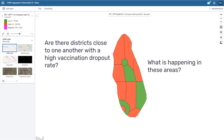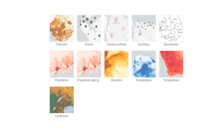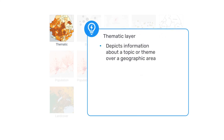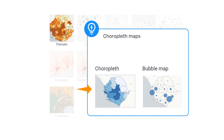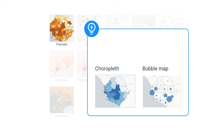Using a map, we can formulate questions like these and identify areas for follow-up. The main types of layers used to analyze aggregate data in DHIS-2 are thematic, facilities, and boundaries. A thematic map depicts information about a topic or theme over a geographic area. These data themes can be shown using a choropleth or bubble map. Choropleth maps display the data based on geographical boundaries, such as district boundaries, as colored polygons. Bubble maps display coordinates of sites or areas with circles.